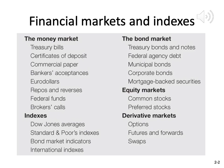In money markets, we have treasury bills, certificates of deposit, commercial paper, bankers' acceptance, euro dollars, repos and rewards, federal funds, and brokers' costs. For the capital markets, we have all the indices, the bond markets, equity markets, and derivative markets.